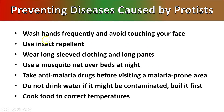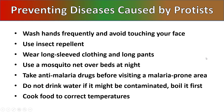Preventing diseases caused by protists: wash hands frequently and avoid touching your face, since they are microscopic. A lot of them are carried by insects, so use insect repellent or wear long sleeve clothing and long pants. Use mosquito nets over beds at night - the mosquito that carries the malaria protozoan frequently feeds at night, and providing mosquito nets has a huge impact on reducing malaria in affected areas. There are also anti-malaria drugs that can be taken before visiting a malaria-prone area. Don't drink water that might be contaminated - if you suspect water or ice is contaminated, always boil it first. Make sure you cook food to its correct temperature so anything parasitic inside is killed off.